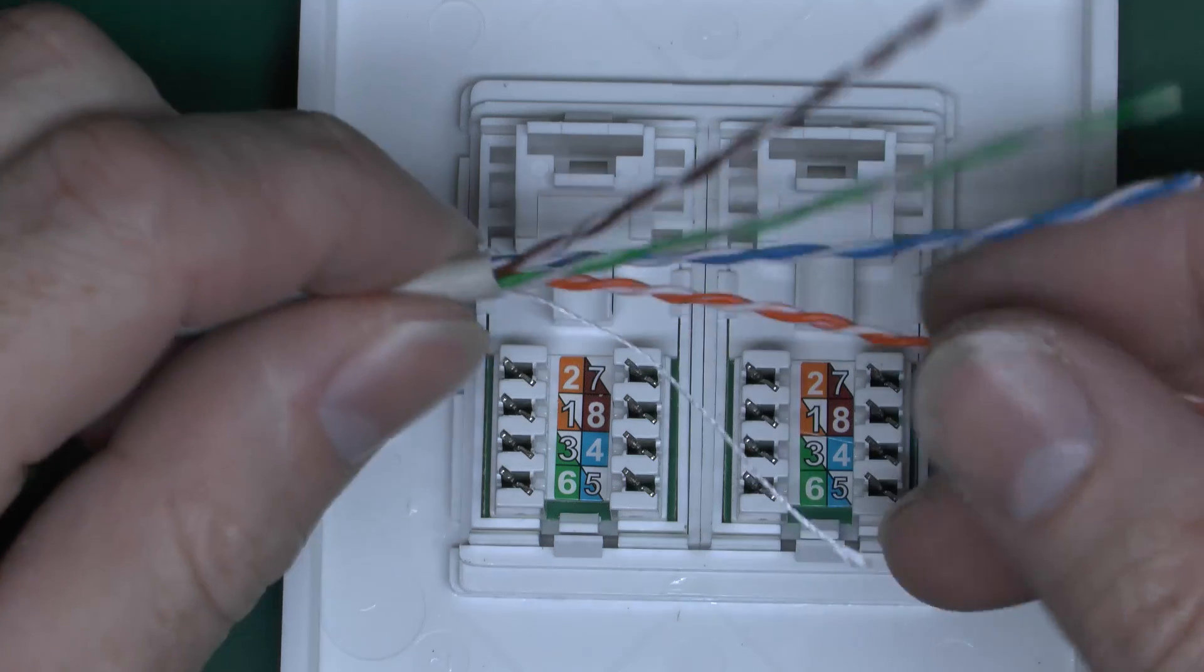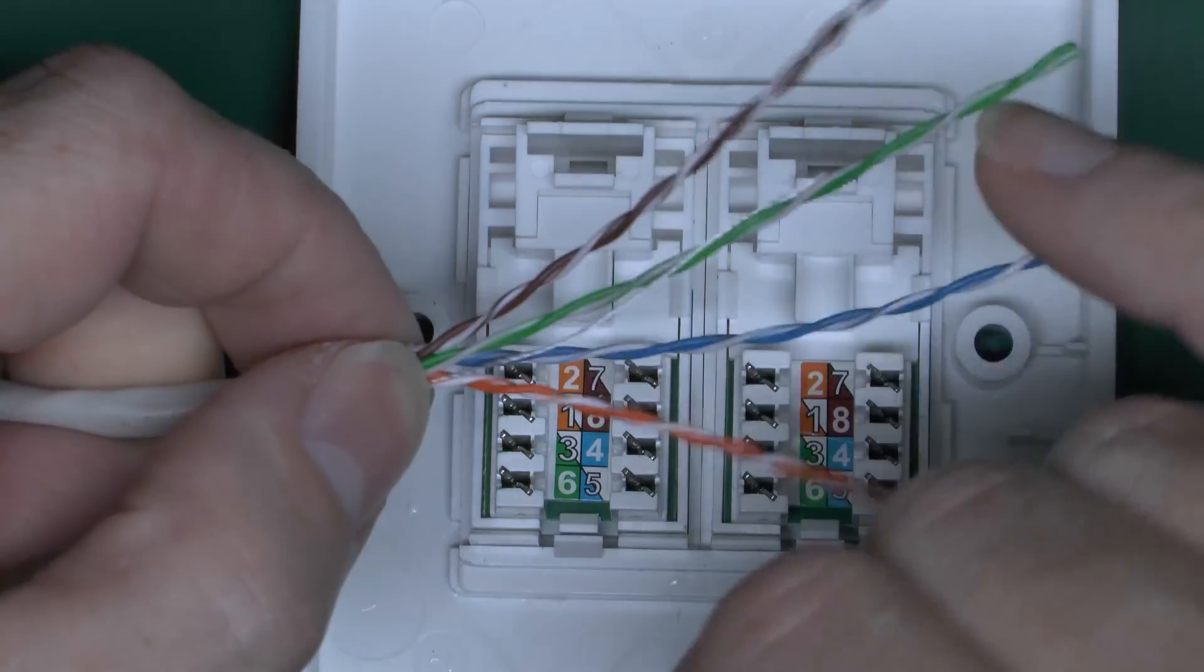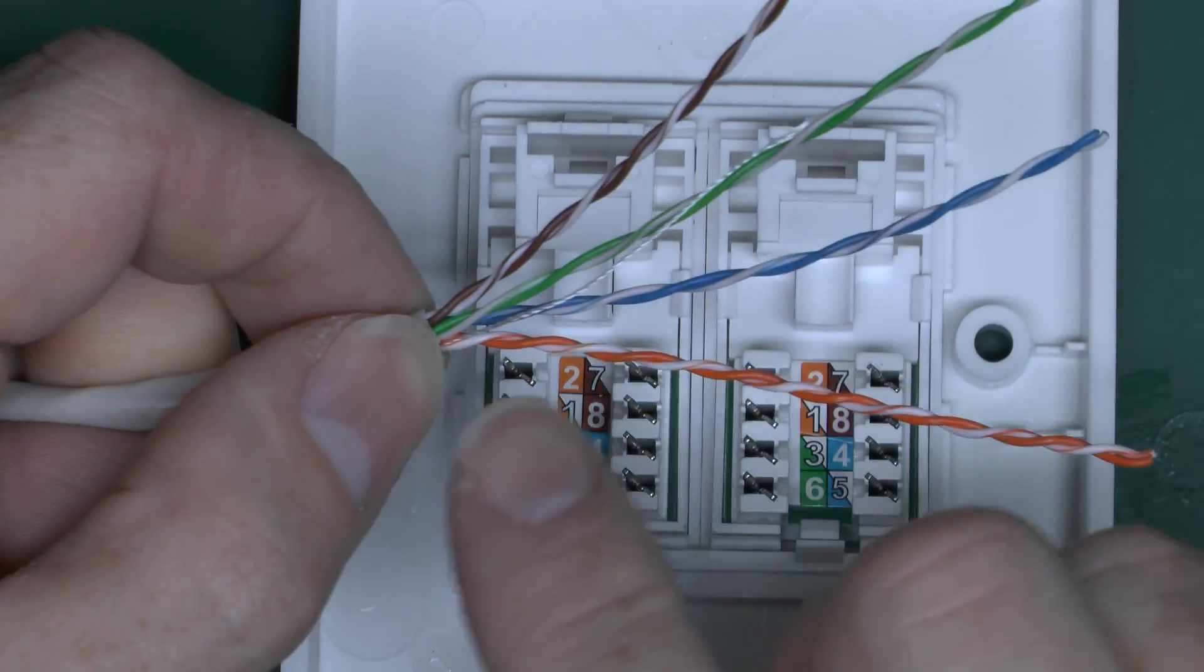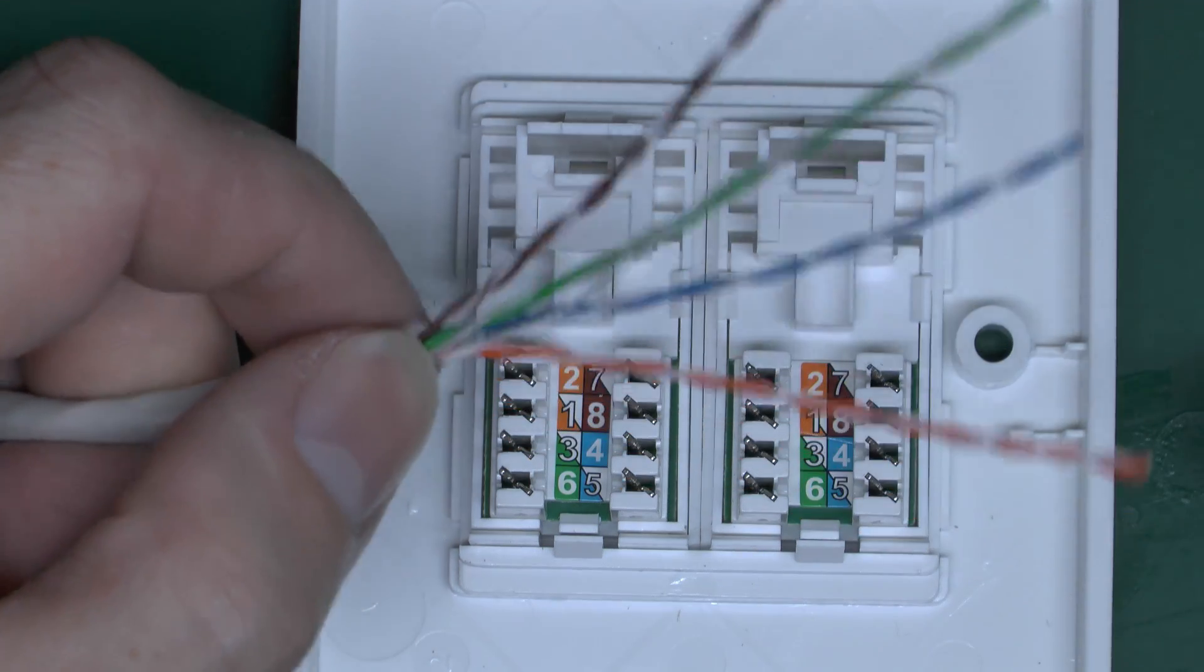The cable is the same one we had before. It's got four colors inside, each one twisted. We've got the solid color, say orange, and then the white with the orange stripe, and the same with the blue, green, and brown.